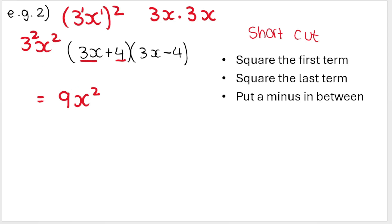So square the first term, square the last term, four squared is 16. And you put a minus in between. That's how easy it is.